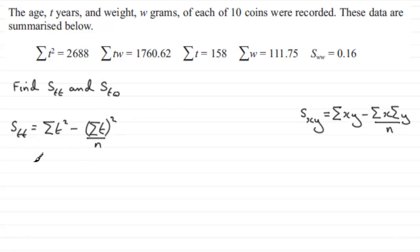So we just need to put our values in now. For sum of T squared, we've got 2688. And then for sigma T, we've got 158. So we've got 158 all squared, divided by N, N being the 10 coins. If you work that out, you should find you get 191.6 exactly.